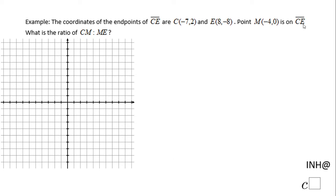Welcome or welcome back, I Need Help at C Squared. In this example we have a segment CE and we notice the endpoints of this segment are (-7, 2) and (8, -8). We also know the point M which is (-4, 0). We want to find out the ratio of CM to ME.